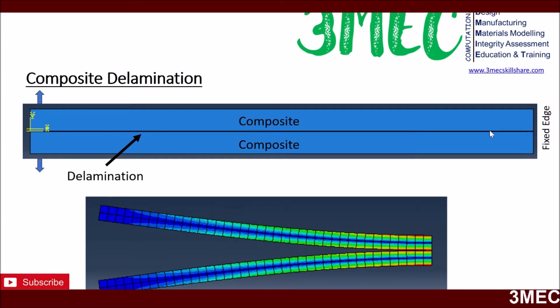There will be a cohesive layer — shown in dark color — and delamination will propagate along this cohesive layer as the cohesive elements start to fail. All the properties I have taken from my previous tutorials and from Abaqus documentation. The idea is to show you the procedure rather than giving you explicit values for a specific case.